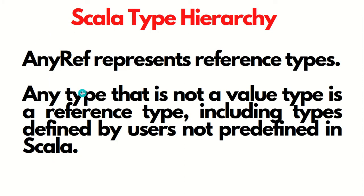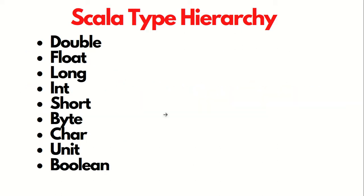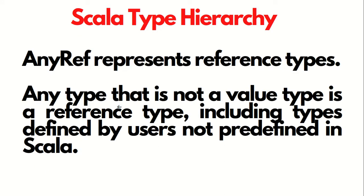AnyRef represents the reference types. Any type that is not a value type is a reference type — meaning any type which is not one of those nine types is called a reference type, including types defined by users that are not predefined in Scala.